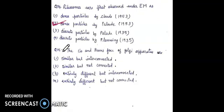Question 15: the cis and trans phases of the Golgi apparatus are entirely different but interconnected. The right answer will be third: cis and trans phases of the Golgi apparatus are entirely different but interconnected.